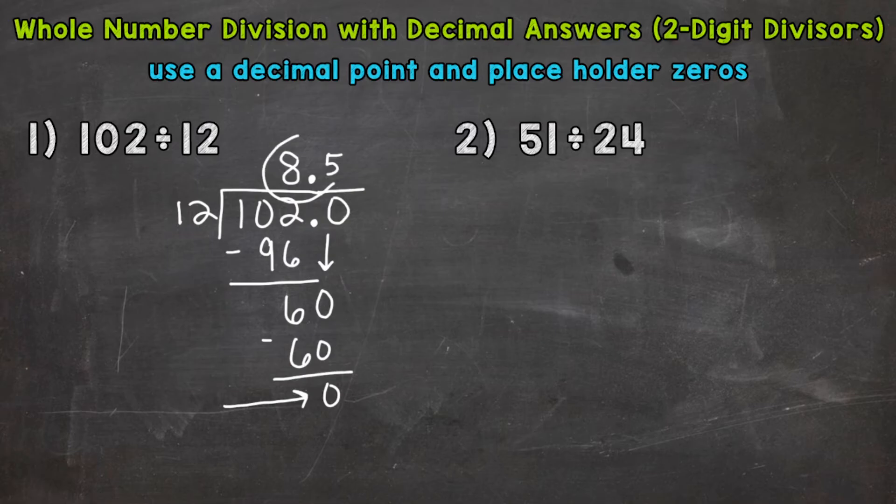So the answer is 8.5. Now we only had to go over to the tenths place as far as placeholder zeros. Other problems, you might have to go further. You go until you get that clean cut zero. That's how you know you are done. So let's move on to number two where we will have to go past the tenths place.